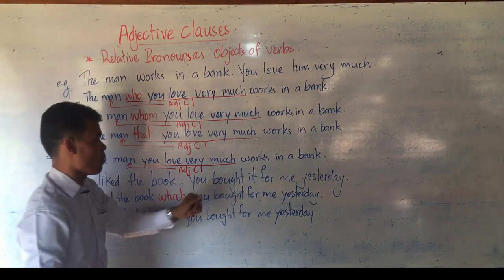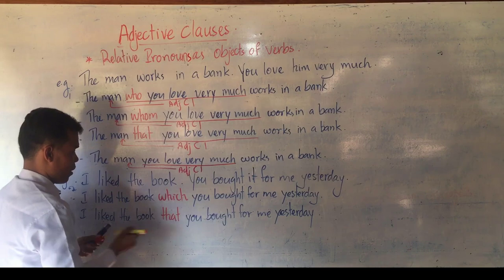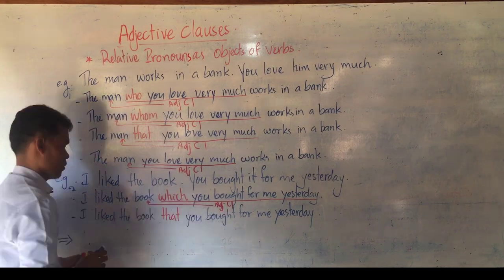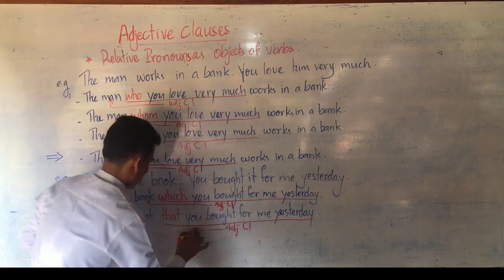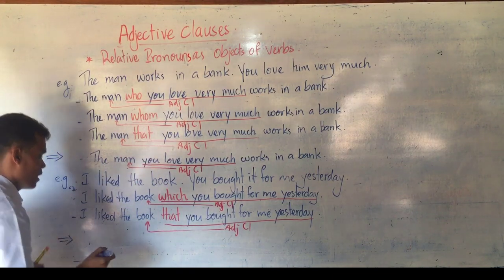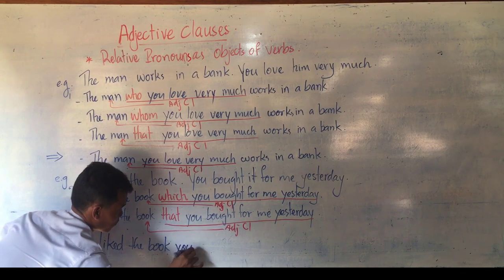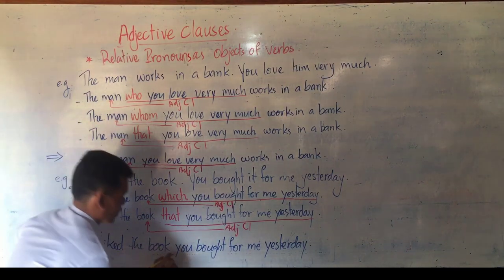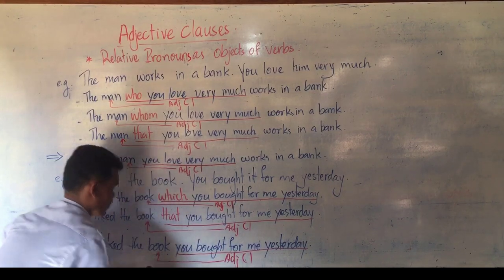Example two: 'I like the book you bought for me yesterday.' We can write: 'I like the book which you bought for me yesterday.' From which to yesterday is the adjective clause modifying the noun 'book.' Also: 'I like the book that you bought for me yesterday.' Because the book is a thing, we can use two relative pronouns: that and which. But if you want to omit it, you can write: 'I like the book you bought for me yesterday' — no need to use any relative pronoun. It is still an adjective clause.